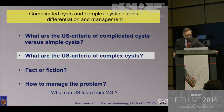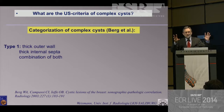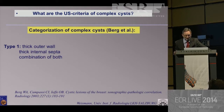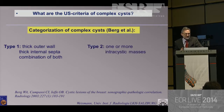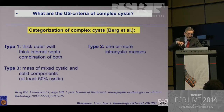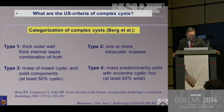What are the ultrasound criteria of complex cysts? Following Wendy Berg, she described four types from the morphological point of view only. Type 1: thick outer wall, thick internal septum, or both. Type 2: one or more intracystic masses. Type 3: a mixed mass of cystic and solid components, but cystic component is more than 50%. Type 4: a mass predominantly solid with eccentric cystic foci, at least 50% solid.